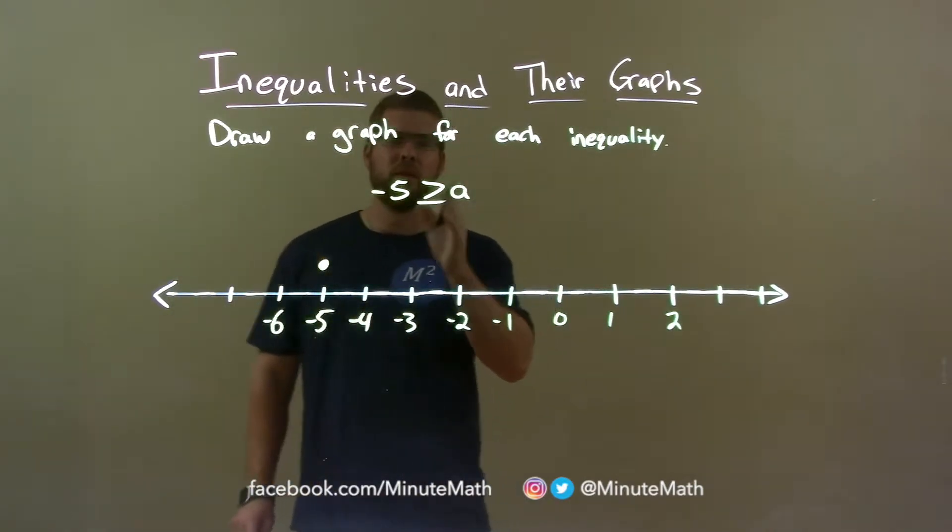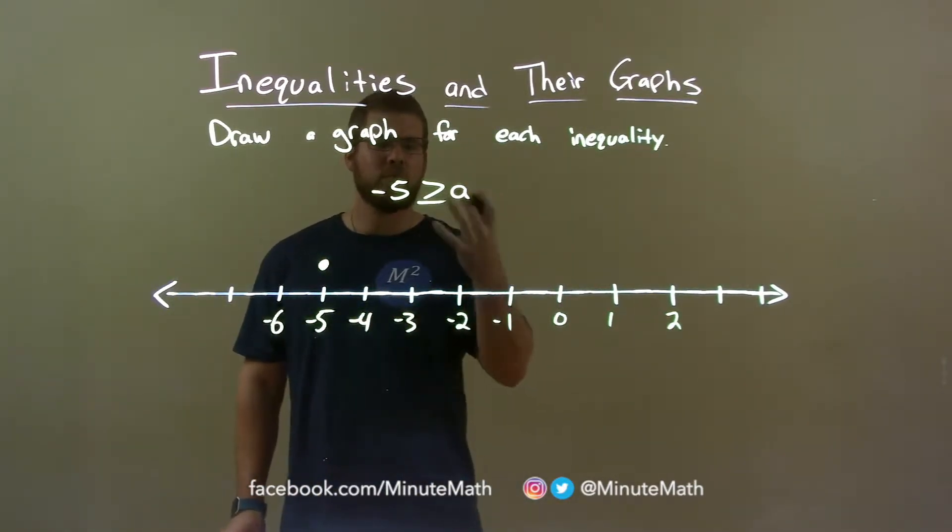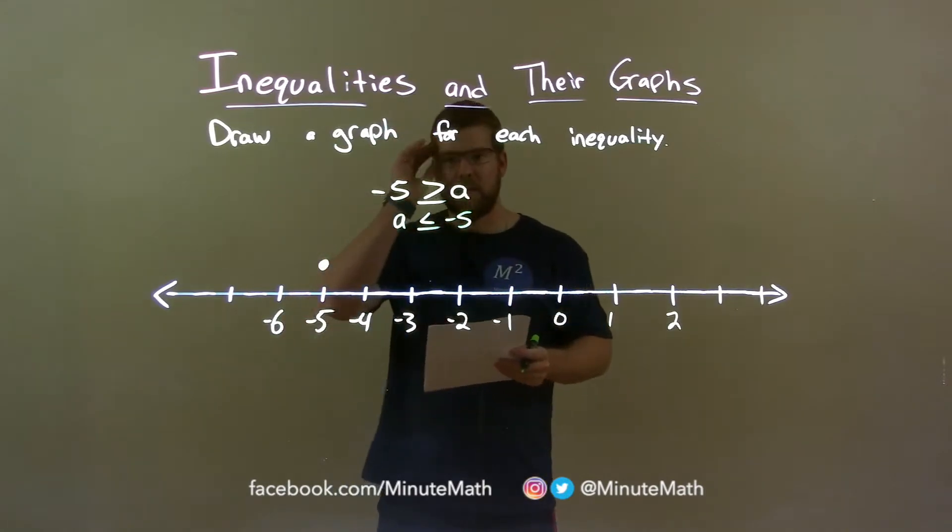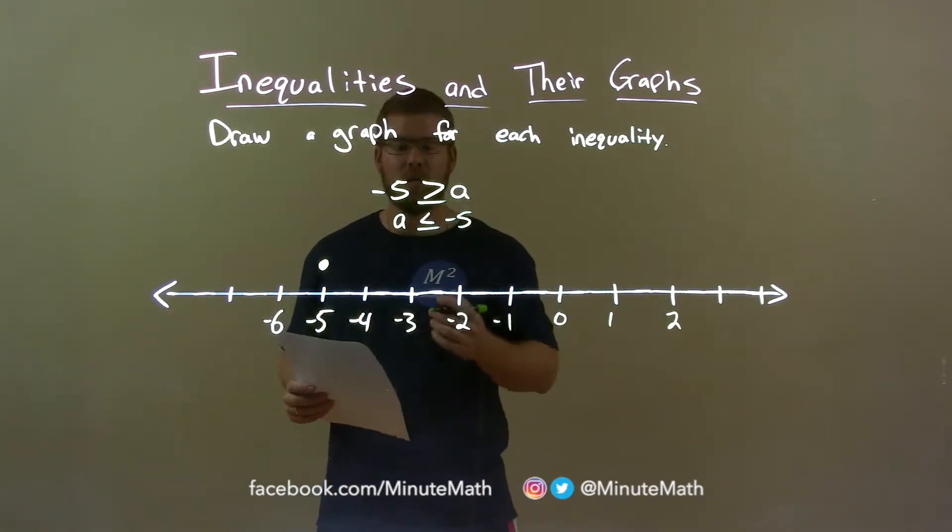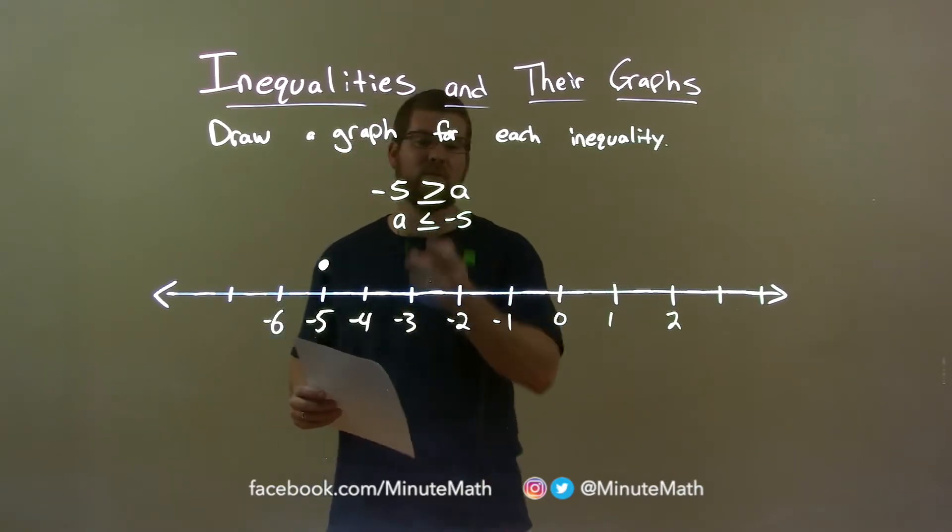Then it says negative 5 is greater than or equal to a. I like to rewrite this to have a come first. So if I have a is less than or equal to negative 5, there we have the same thing. We can flip everything together. Negative 5 is greater than or equal to a is the same thing as a is less than or equal to negative 5.